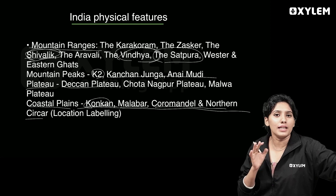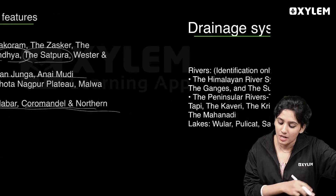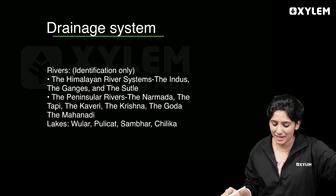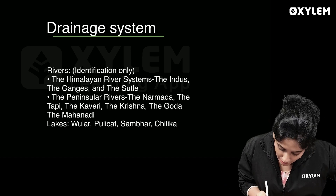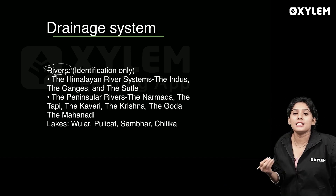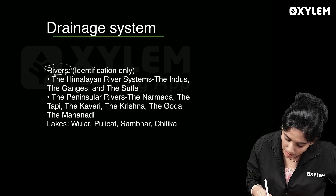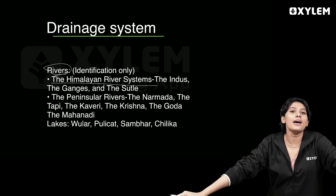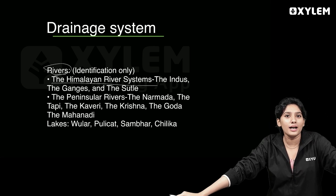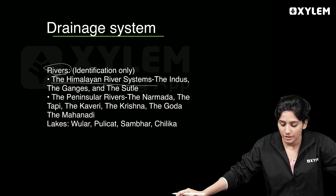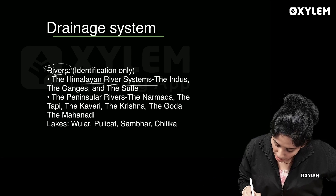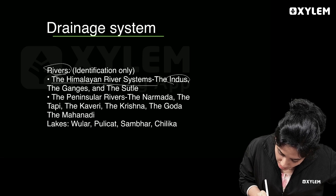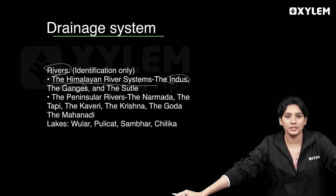Now let me show you the map questions for the Drainage System chapter. It is a simple chapter. The Himalayan rivers to mark are the Indus, Ganga, and Brahmaputra — along with some tributaries.